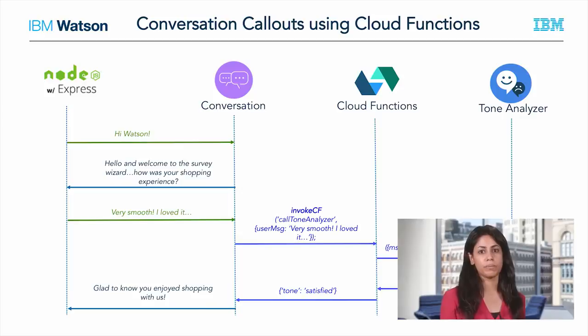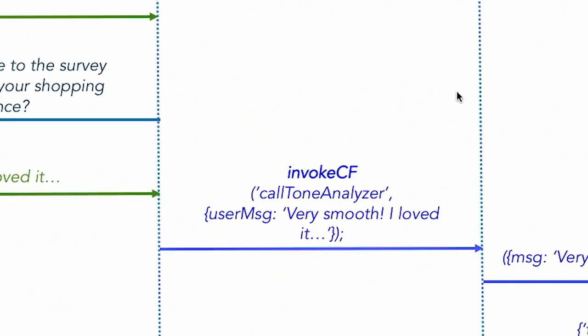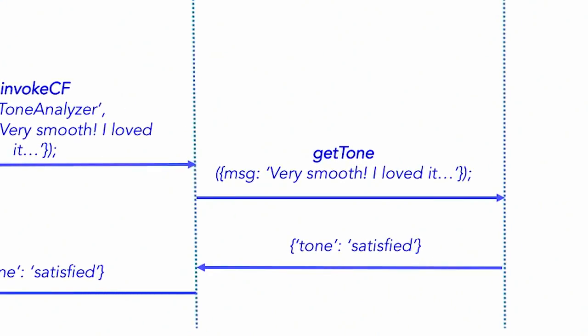All you really need to do is add callouts to Cloud Function actions from inside the Conversation tooling itself. These actions know they need to make the call to the Tone Analyzer service. The way to invoke these actions is by including their name along with a bunch of parameters — such as the user text or other information — which the Tone Analyzer service uses to make a decision on the user's tone. If you don't have a Cloud Functions account, just go to the Bluemix catalog and sign up.